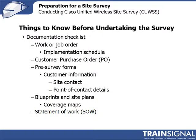The first thing you want to do is have your work or job order in front of you. That would have a reference number, the customer name, the location, and typically some sort of expectation of when the job will be done, along with an implementation schedule. In addition, there may be a customer purchase order, and before you go out on any job order, you want to make sure the purchase order has been done and approved so that the work can be effectively billed for.